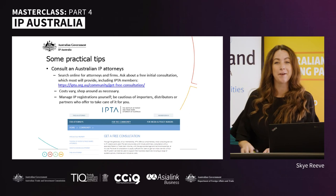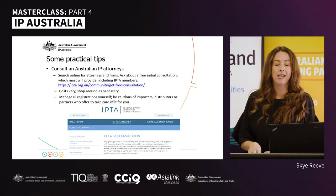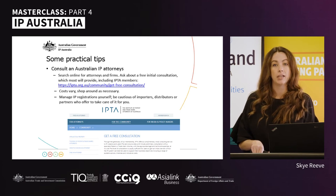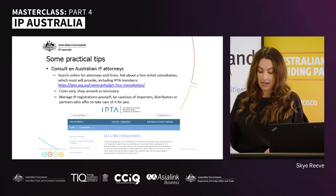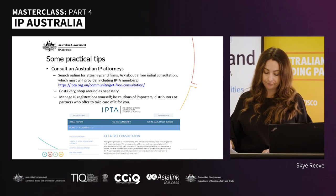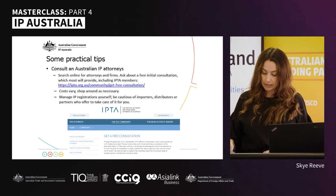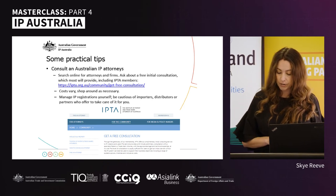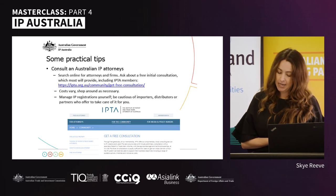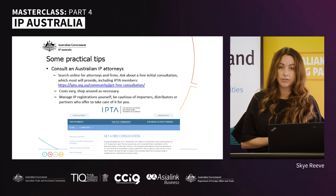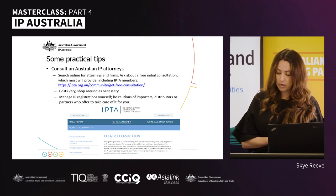Some practical tips: consult an IP attorney. IP Australia provides support and information regarding IP for Australian businesses, SMEs and individuals, but we do not provide legal or business advice, so you will need to engage an IP professional. A good starting point is the Institute of Patent and Trademark Attorneys of Australia, also known as IPTA. You can find a trademarks attorney in your city easily — many will give a free initial consultation, so consider shopping around to find someone who understands your business well.